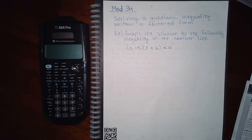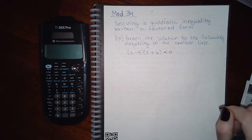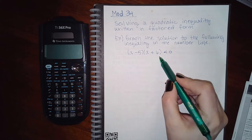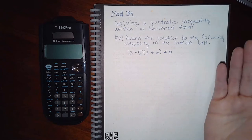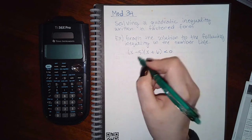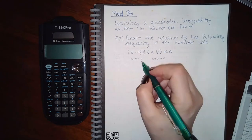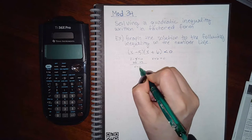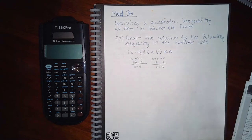In this video we're going to cover module 34, and the first topic is solving a quadratic inequality written in factored form. The directions say to graph the solution on the number line. Normally when there's an equal sign, we set each factor equal to zero to find the answers. However, when it's an inequality, setting each factor to zero only gives you what I call points of interest or critical numbers. These are not necessarily the answers — they will just help you come up with the answer.